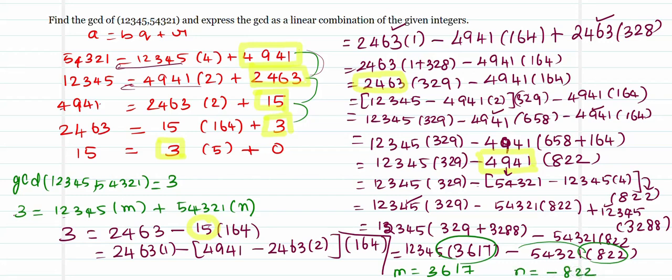I hope these two extended problems give you a clearer idea of how to proceed with Euclid's algorithm and then find the linear combination of the GCD of given numbers. Please post any doubts in the comment section — we will try to get back to you at the earliest. Happy learning, keep learning. Thank you.